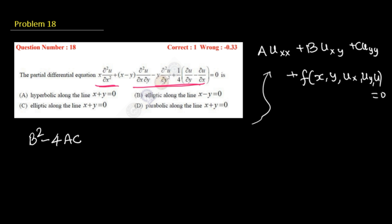The discriminant is calculated as B² minus 4AC. If it is greater than 0, equals 0, or less than 0, then we say it is elliptic, parabolic, or hyperbolic respectively.